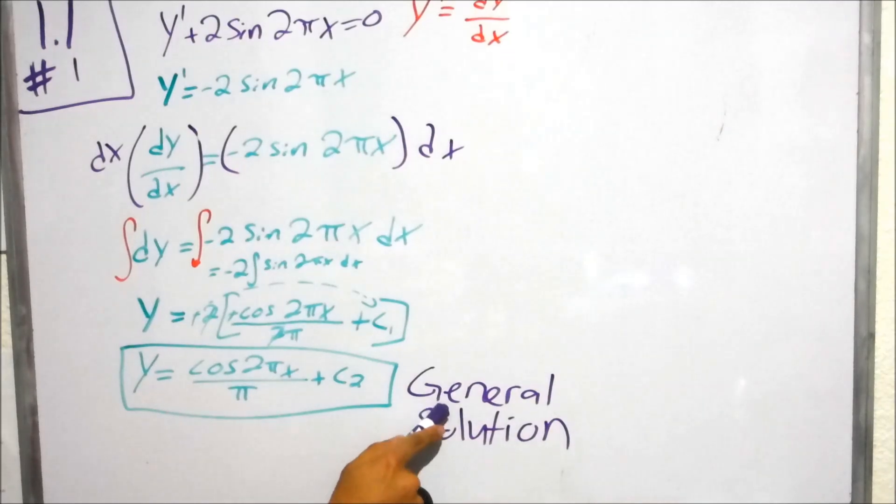Again, it is general because of the fact that this is a constant. We don't know what this constant is. So it can represent cosine 2 pi x over pi plus 1 plus 2 minus 100 plus 4.712 plus pi. You know, any constant number.